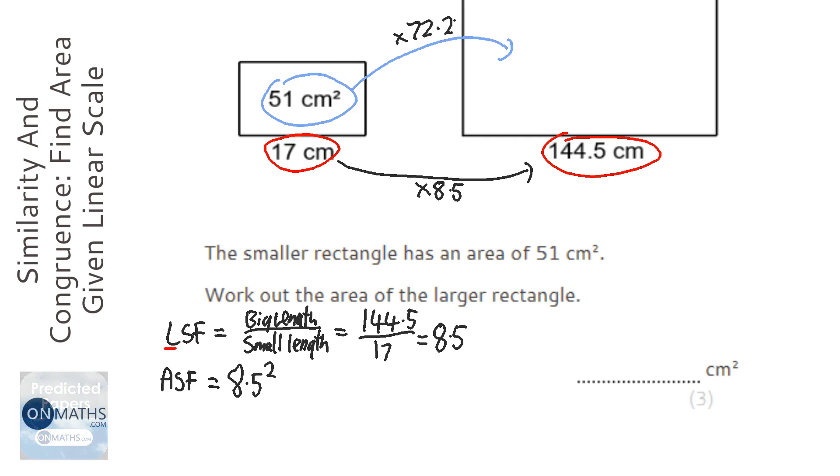So to work out what it's going to be, I'm going to get my area of the small rectangle, which is 51, I'm going to times it by the area scale factor, which is the linear scale factor squared, and I get the answer of 3684.75.